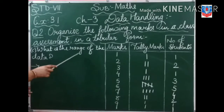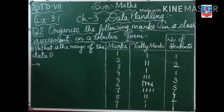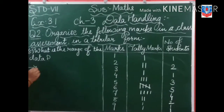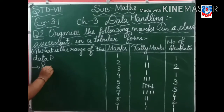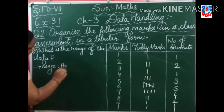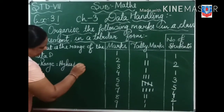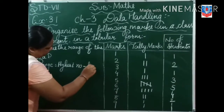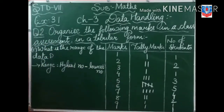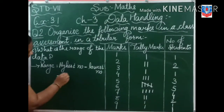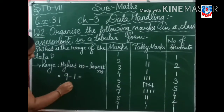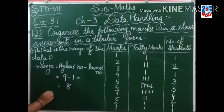Question C: What is the range of the data? Range is equal to highest number minus lowest number. Highest number is nine and the lowest number is one. So nine minus one is equal to eight. Therefore, range is equal to eight.